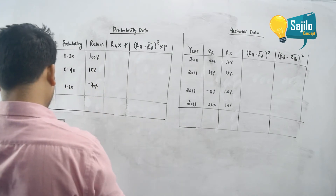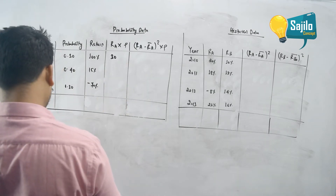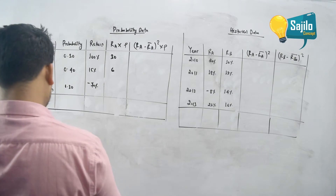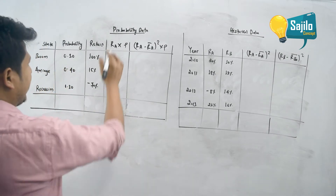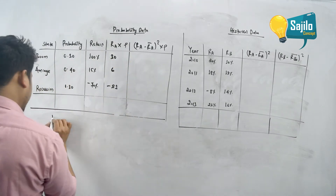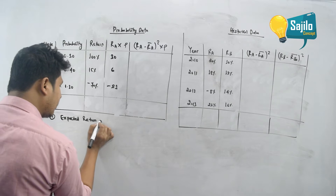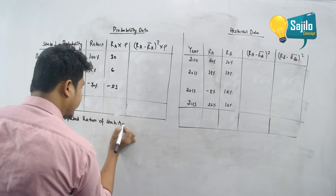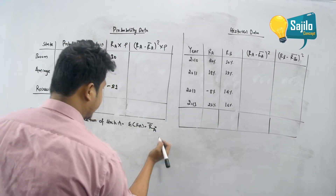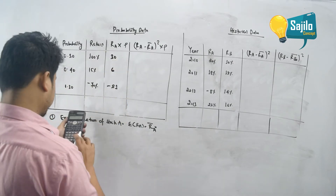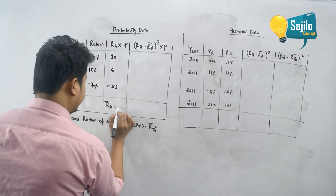R_A at the start of the period: 100 into 0.3 equals 30; 15 into 0.4 equals 6; negative 70 into 0.3 equals negative 21. Now this is the sum — this is the expected return of a stock. The sum is 30 plus 6 minus 21, which equals 15. So R_A equals 15 percent.